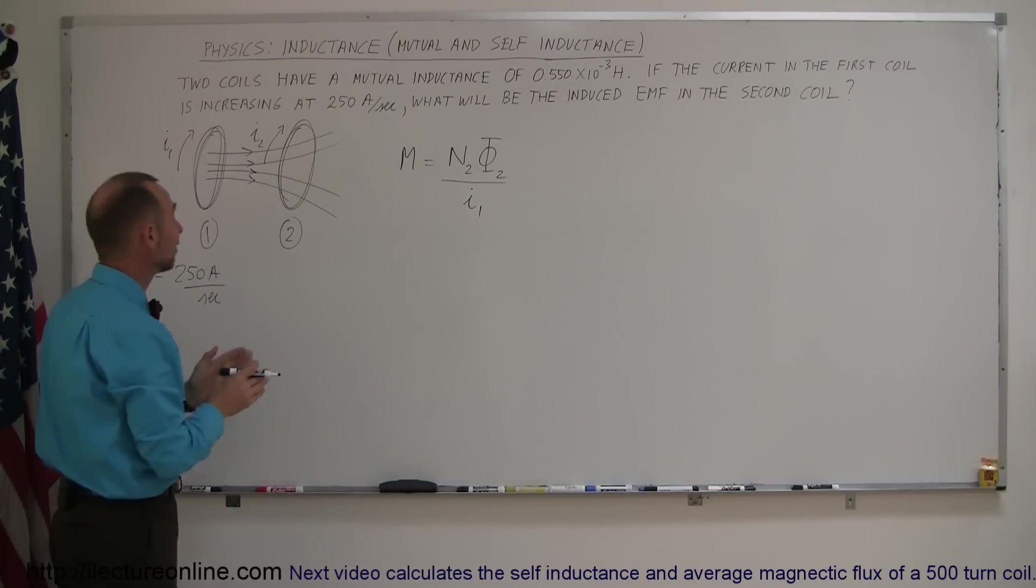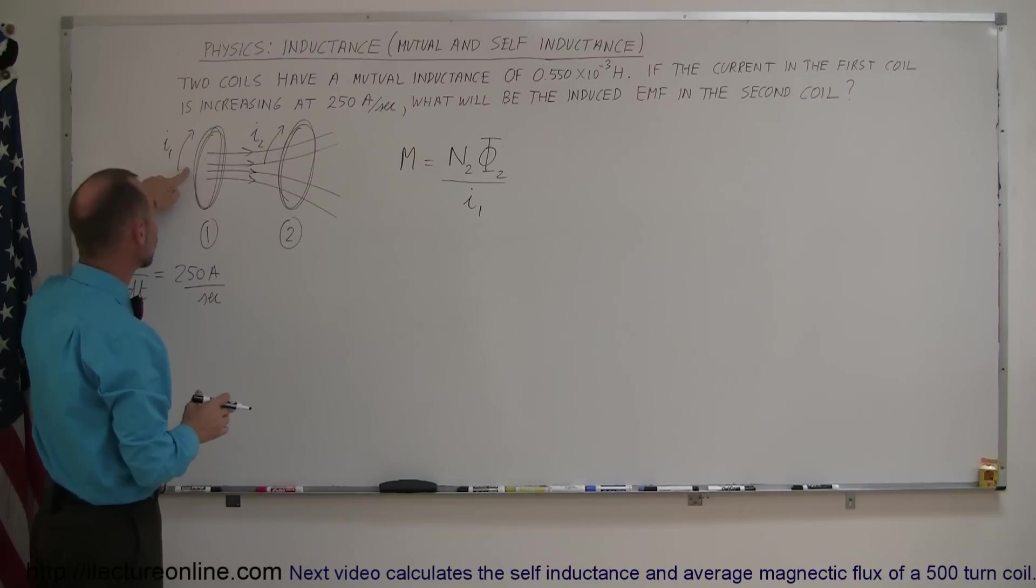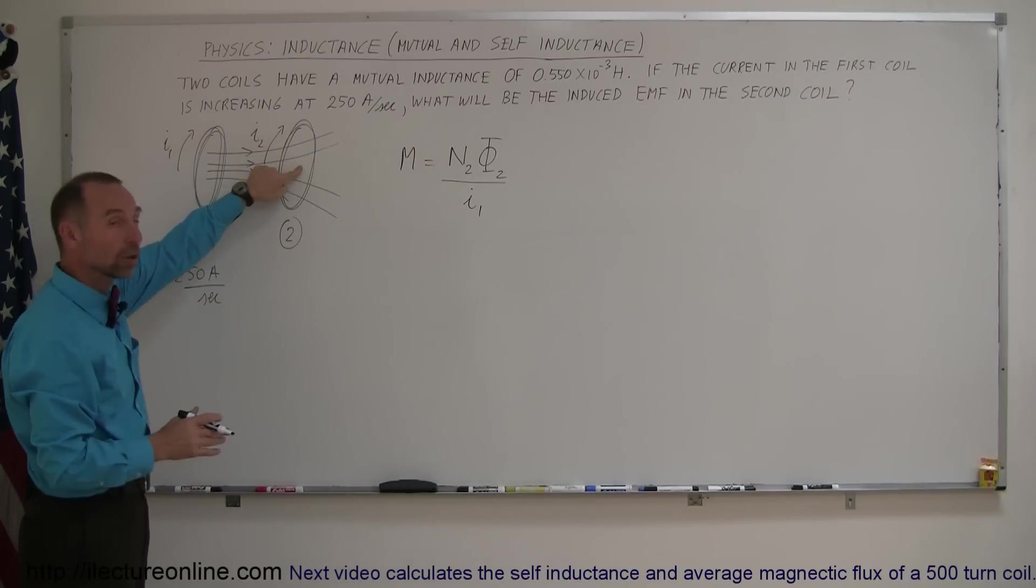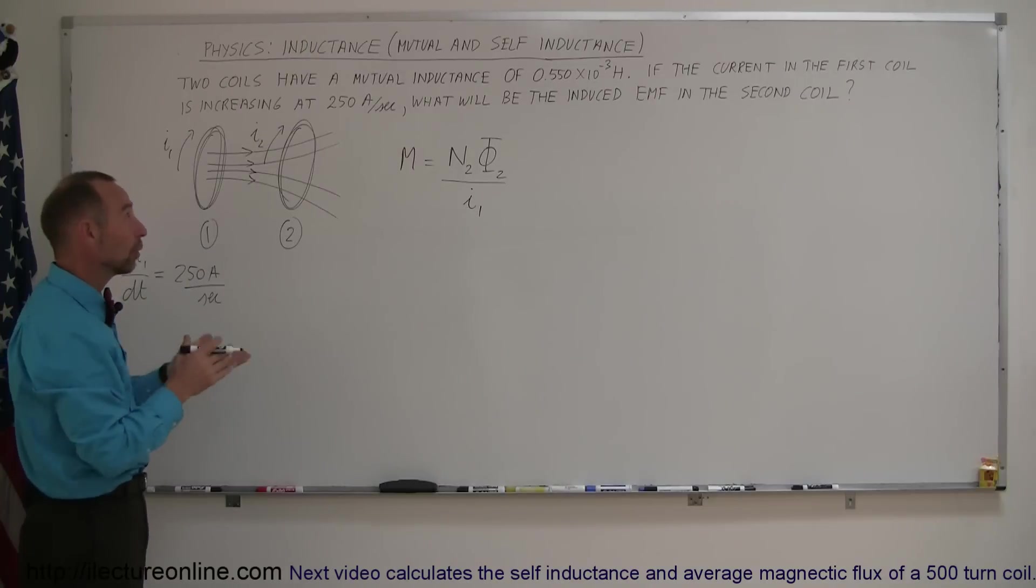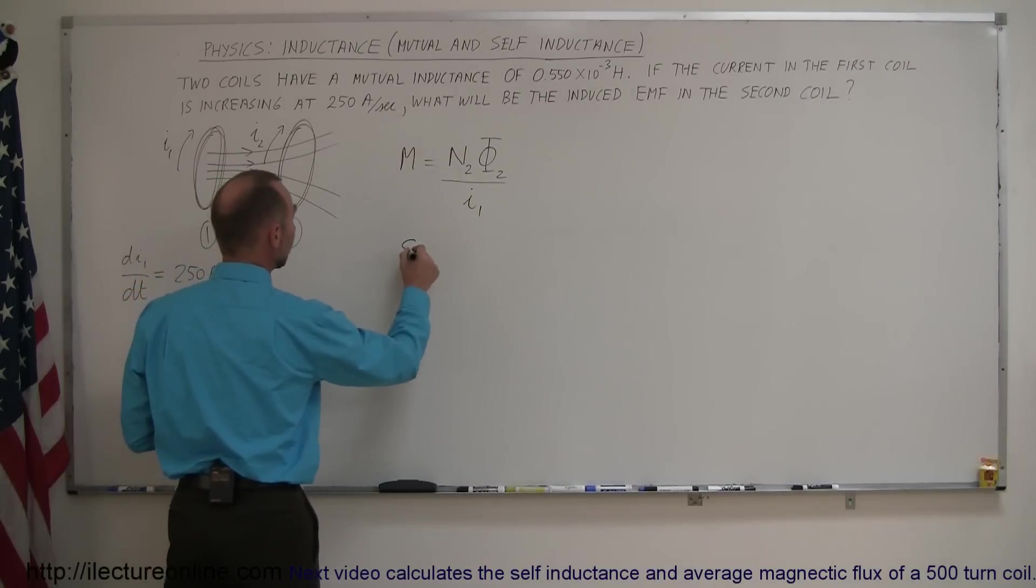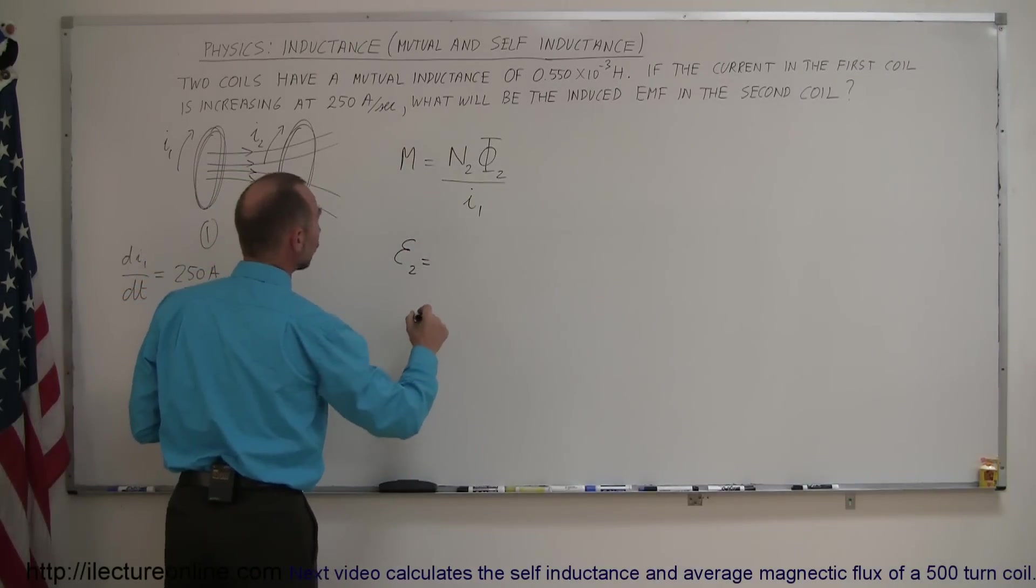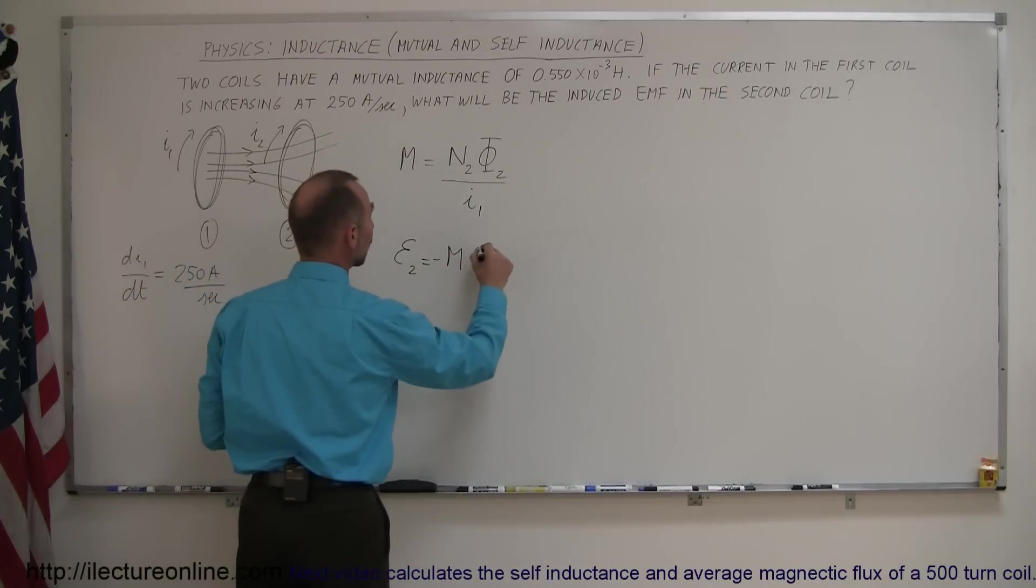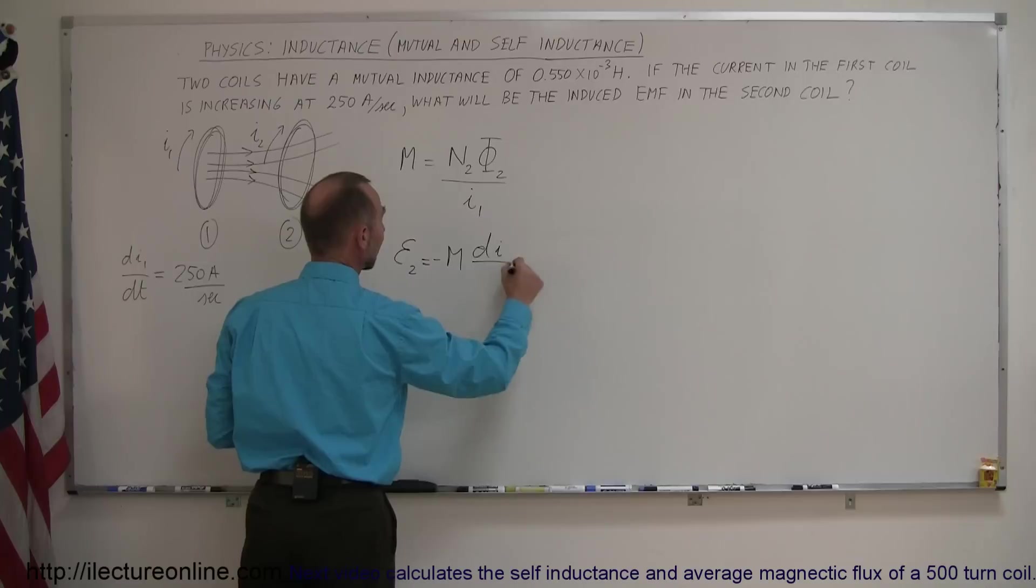The second thing we need to know is that if the current changes in coil number 1, it will cause the flux to change in coil number 2. And, of course, we've learned that if the flux changes through a coil, it will induce an EMF. The EMF induced in the second coil is equal to the mutual inductance, or I should say the negative of the mutual inductance between the coils times the rate of change of the current in the first coil.